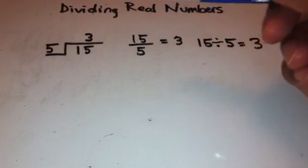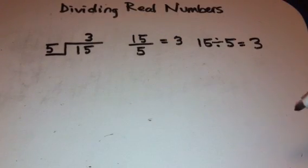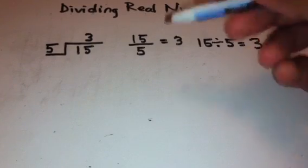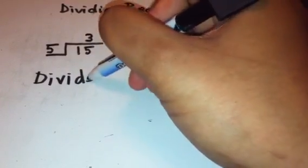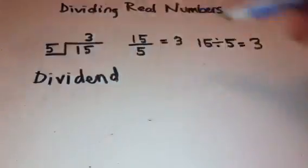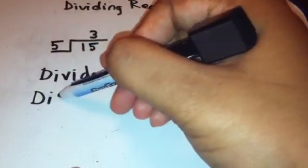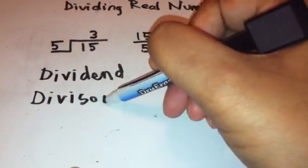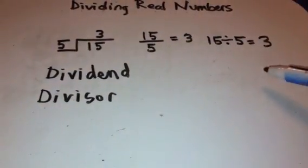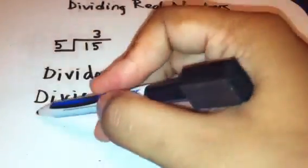And we have the dividend, divisor, and quotient. So our vocabulary terms for this lesson are dividend, divisor, and quotient.